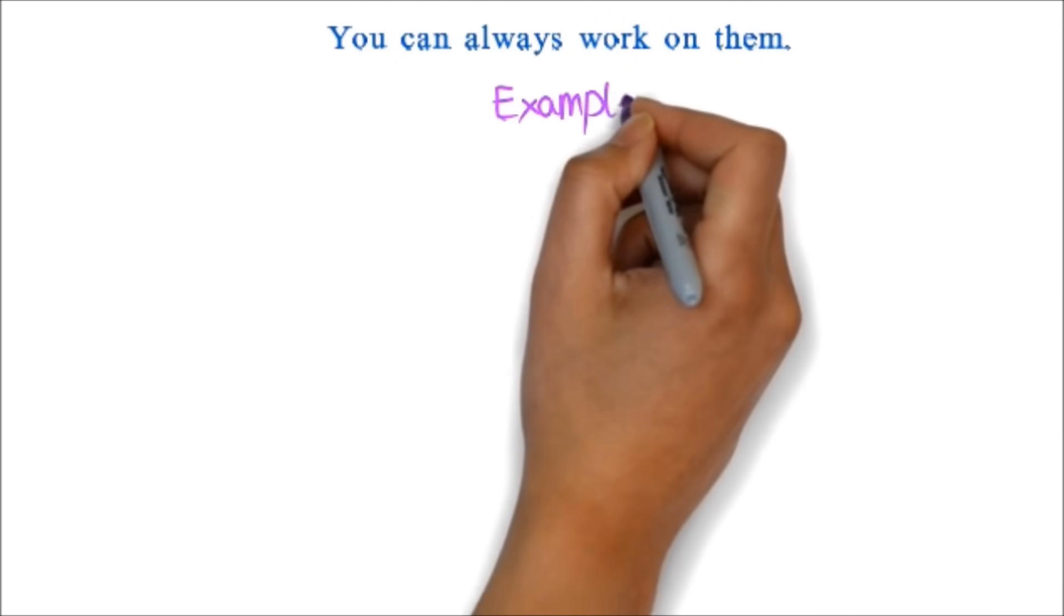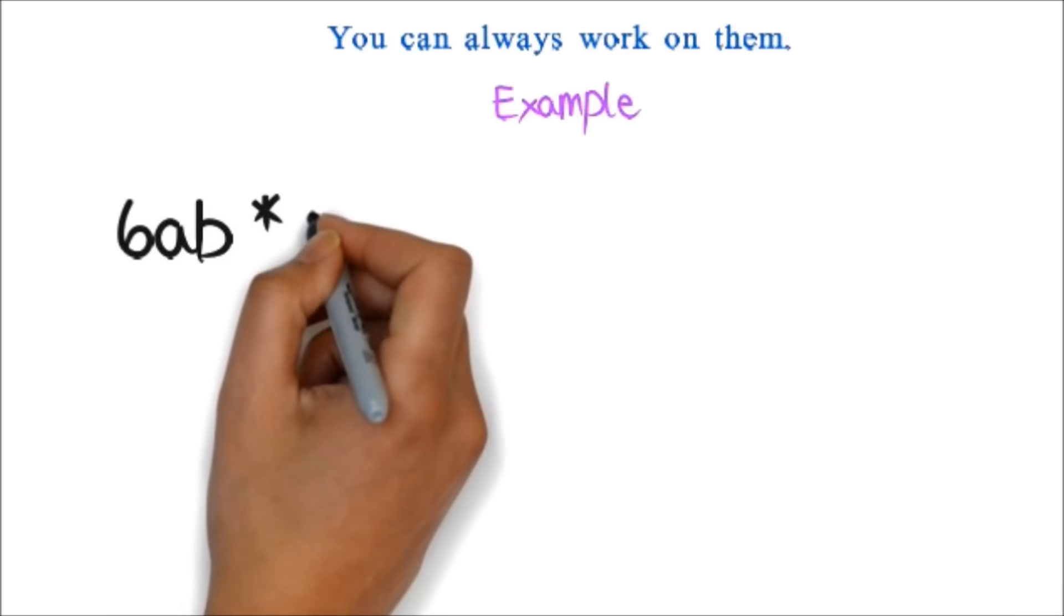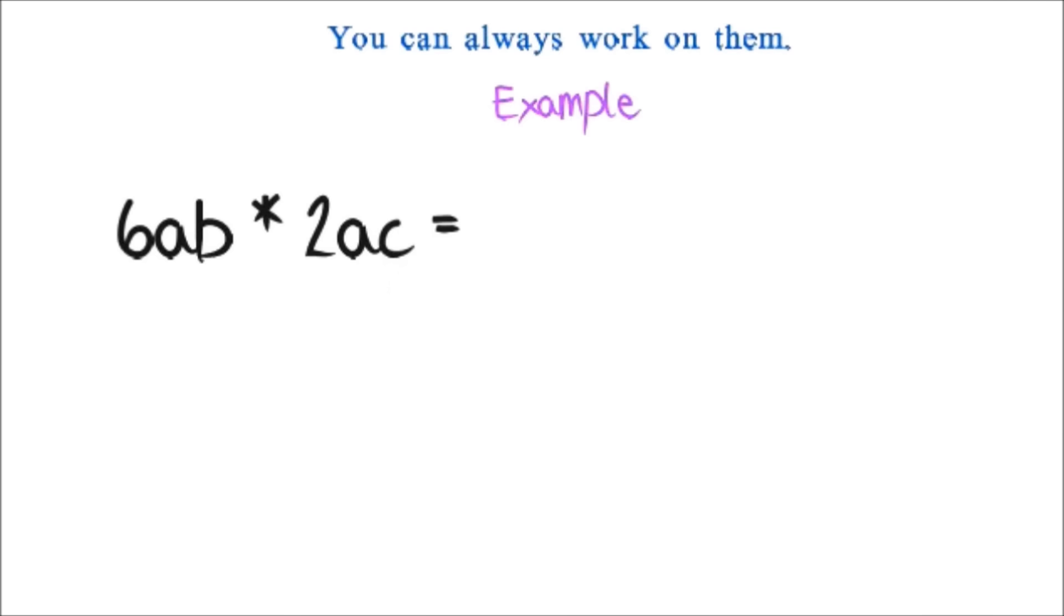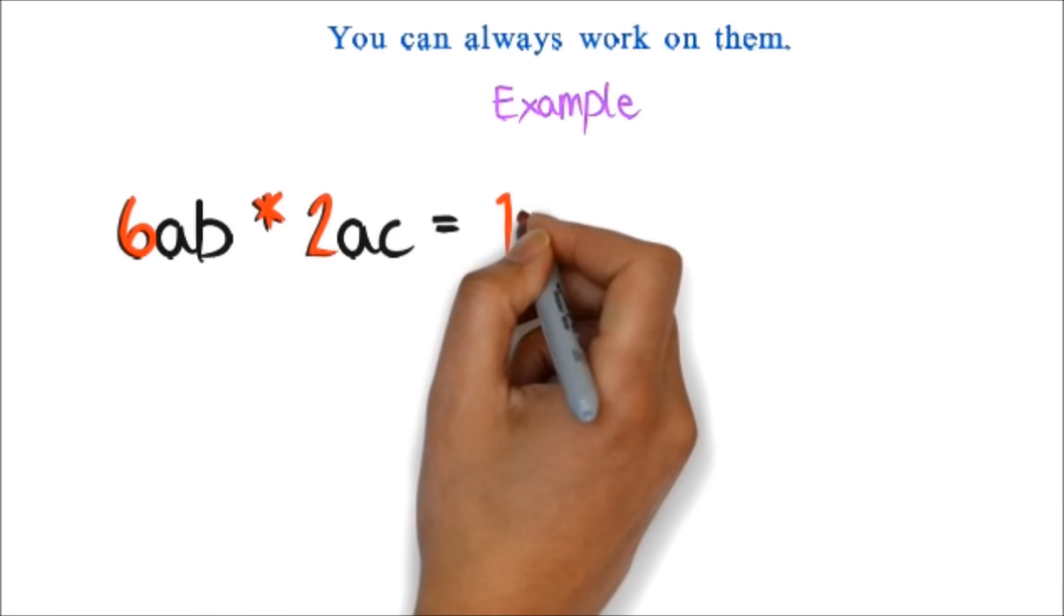Example, 6ab times 2ac. The first thing you'll do is multiply the numbers just like we did in basic math. Multiply the 6 and the 2 to get 12.